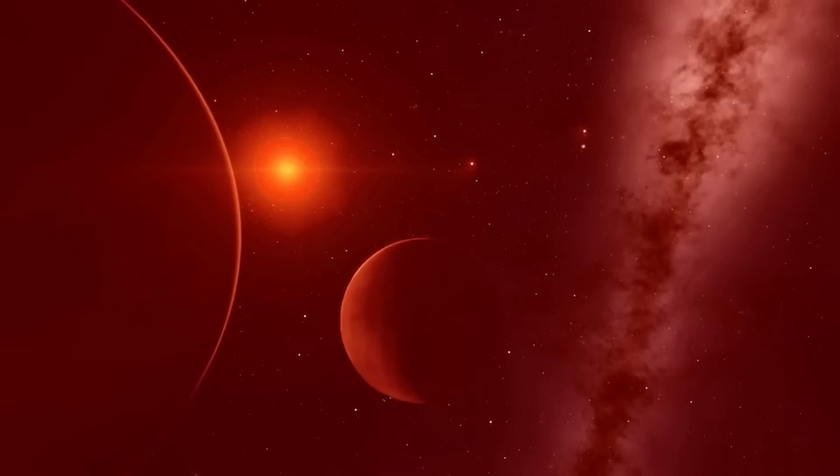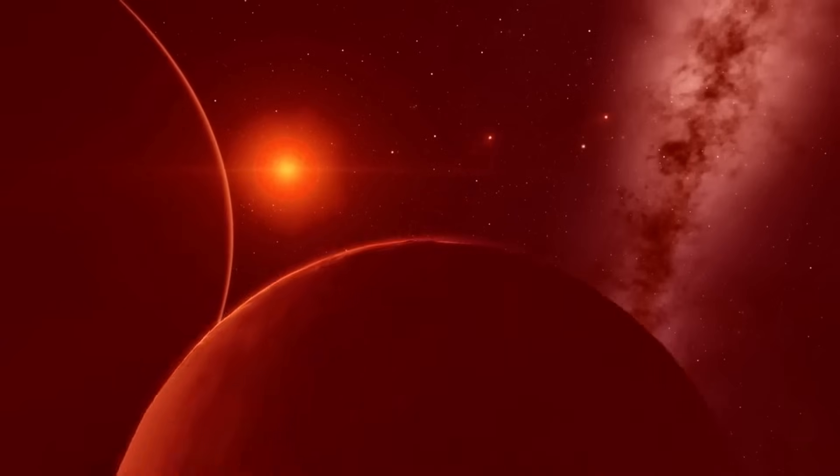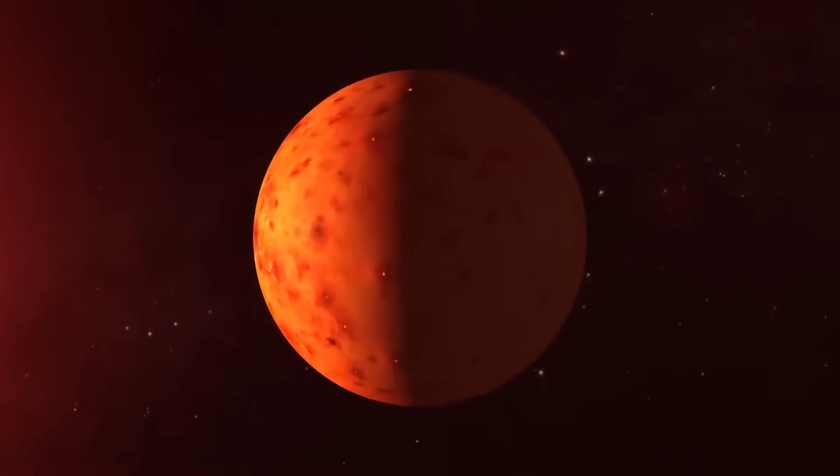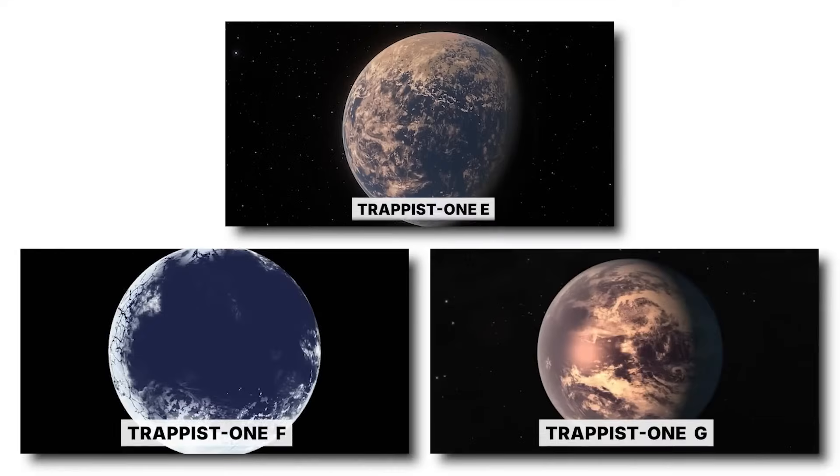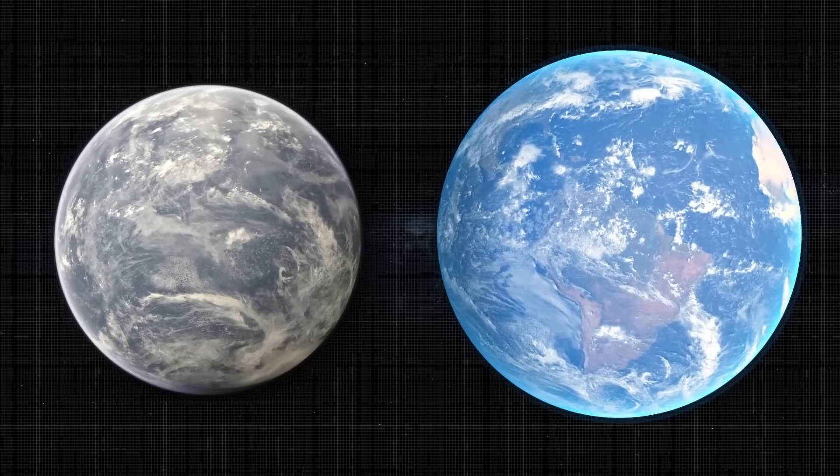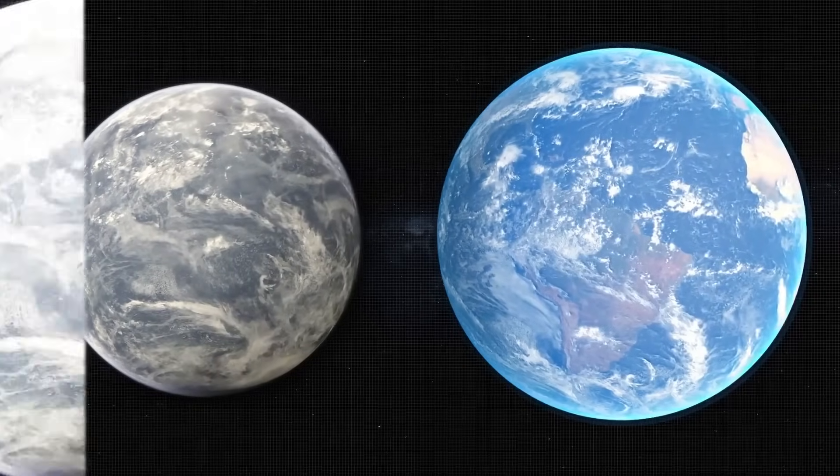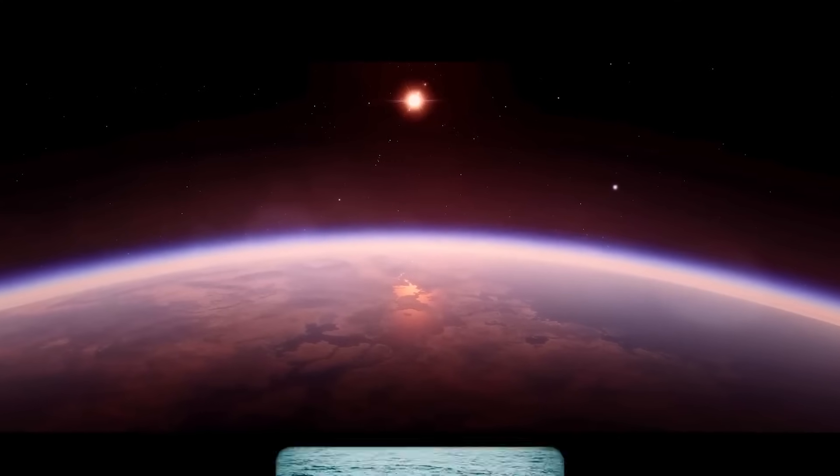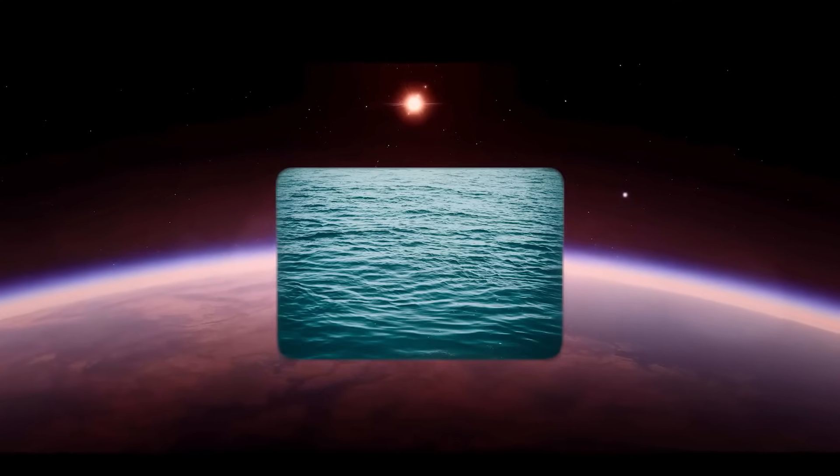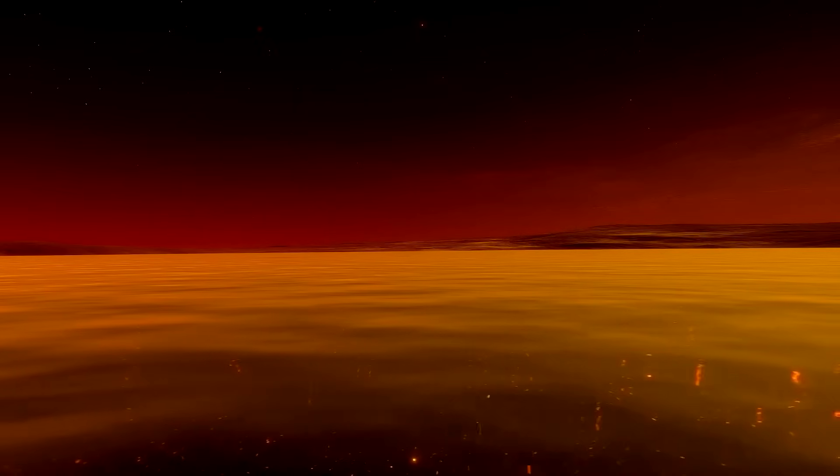What makes TRAPPIST-1 so special isn't just the number of planets—it's their potential. Out of the seven, three (TRAPPIST-1 E, F, and G) are positioned perfectly within the star's habitable zone, the sweet spot where temperatures might allow liquid water to exist on the surface. And where there's water, the potential for life follows.